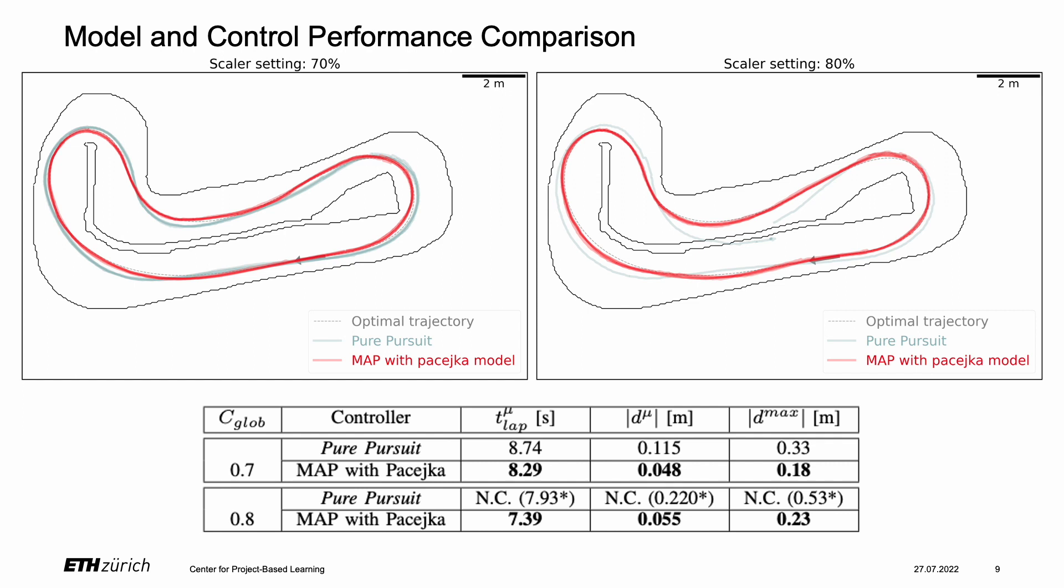Notably, the Pure Pursuit controller was not able to complete 5 laps at the higher speed setting as the lateral deviation caused it to crash into a track bound.